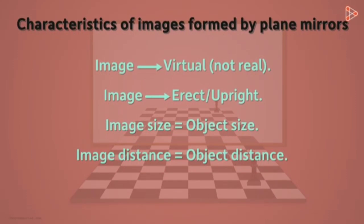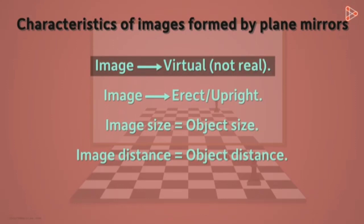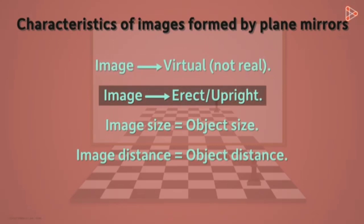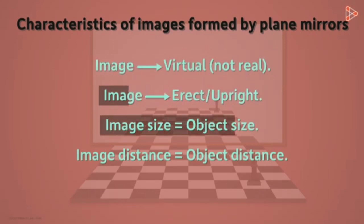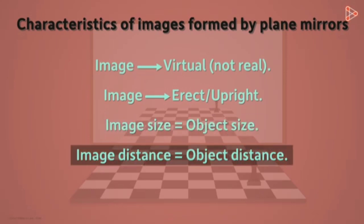The characteristics of the image formed by a plane mirror: the image is a virtual image, the image is erect, the size of the image is the same as the object size, and the image distance is the same as the object distance. This is the peculiarity of a virtually formed image.